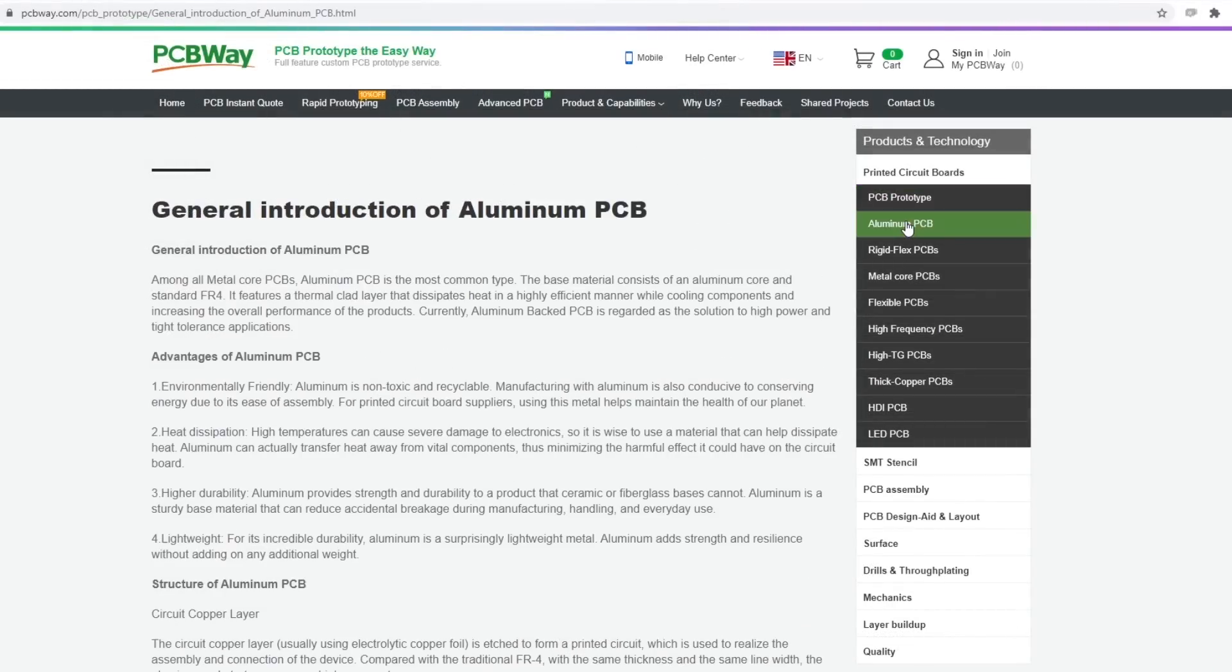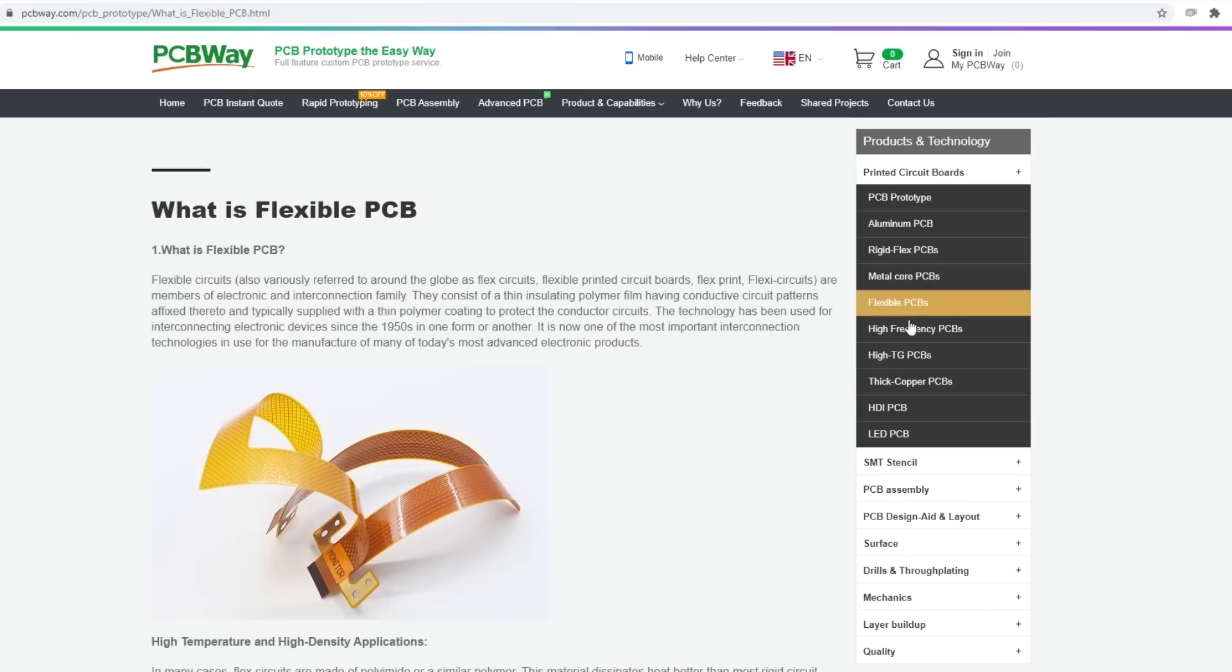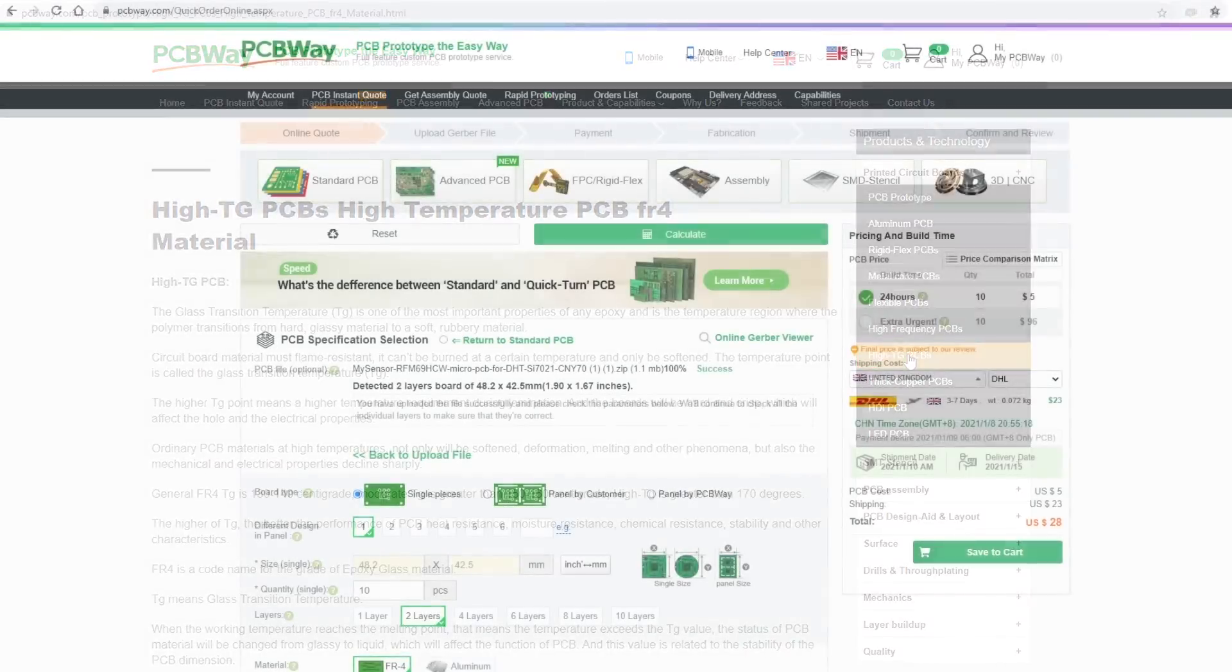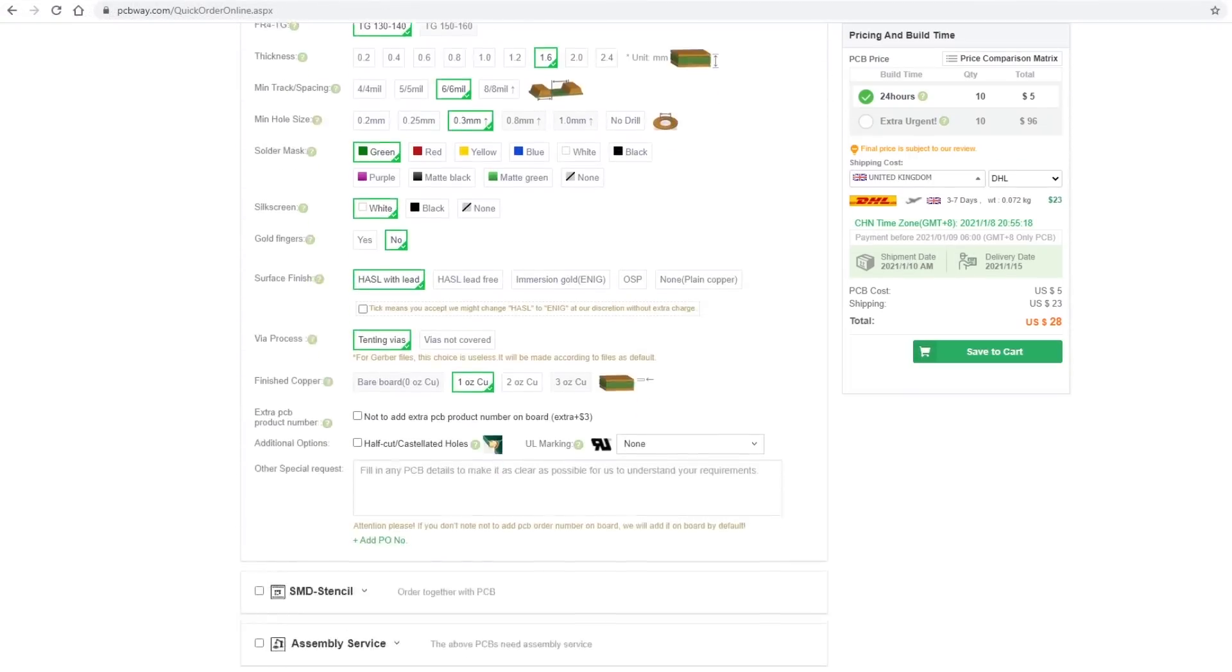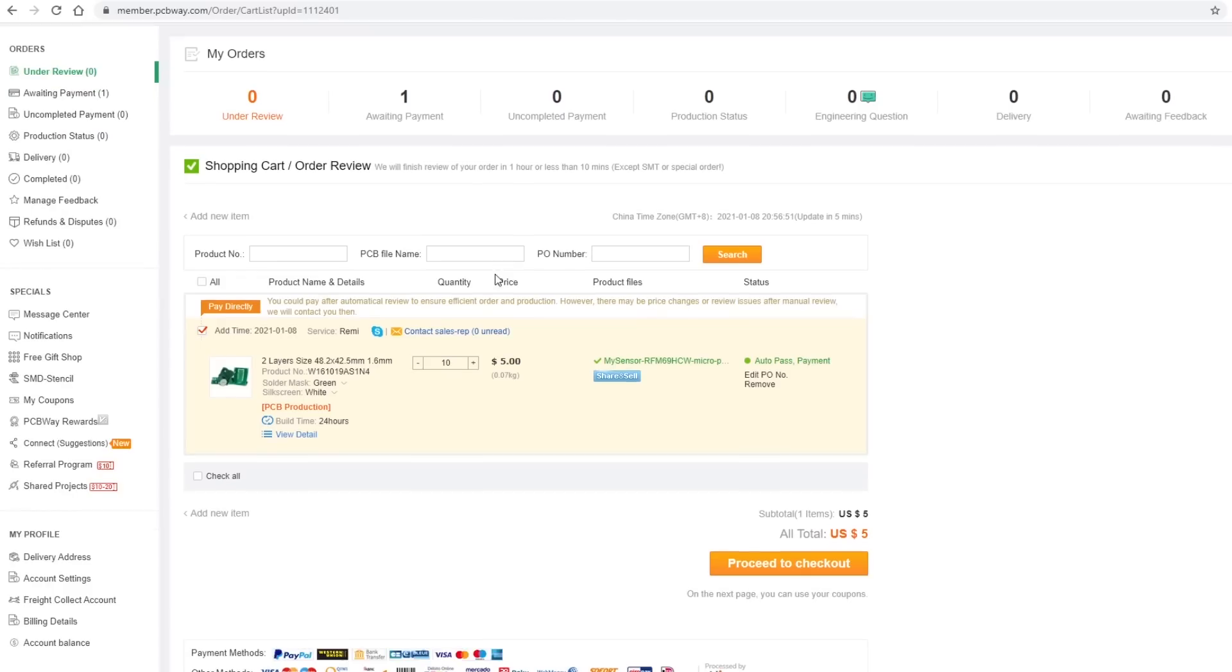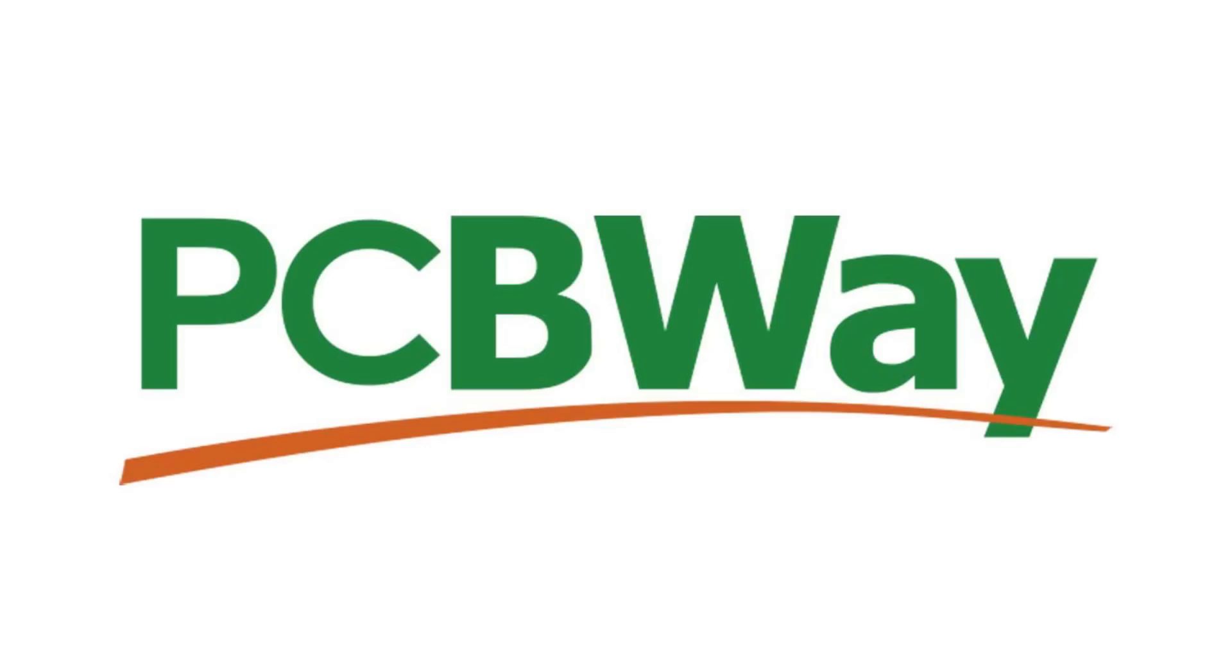PCBWay manufacture all sorts of boards including standard fiberglass PCBs but also aluminum PCBs, flexible PCBs and rigid flex PCBs which are part rigid and part flexible. Prices start at $5 for 10 standard PCBs and $30 for 10 PCBs with assembly, but new customers can get $5 credit so you can get 10 PCBs for free the first time you order. Find out more now at PCBWay.com and I'll put that link in the description to this video.